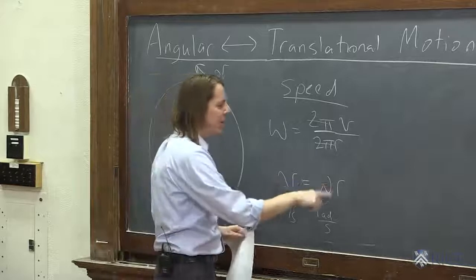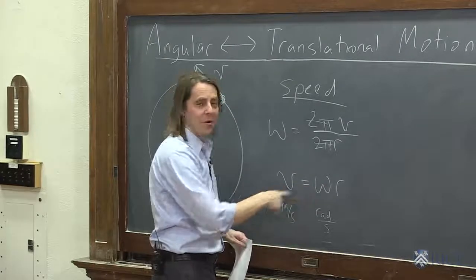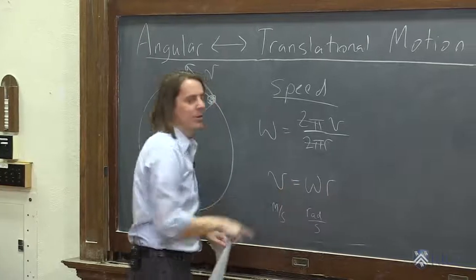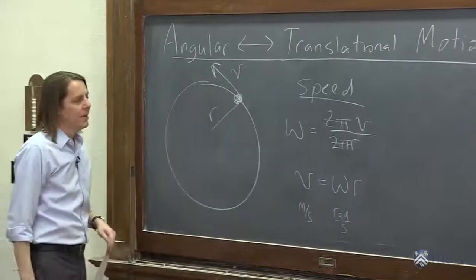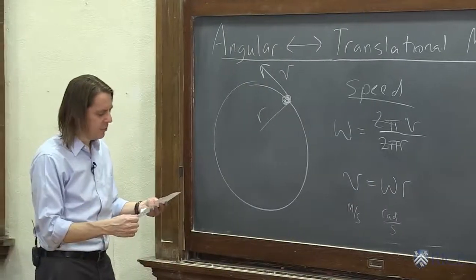So if you can't remember if it's v equals omega r or omega equals v r, well, first of all, just remember, it's v equals omega r. But the units can always get you there. It's the omega that needs another meter to become meters per second. So I just found this easier to remember than all of the omega and all the T formulas.